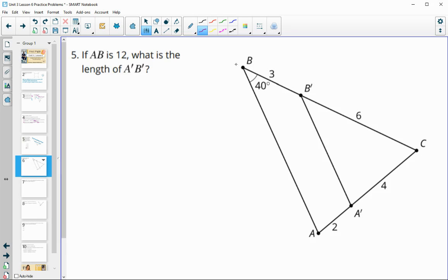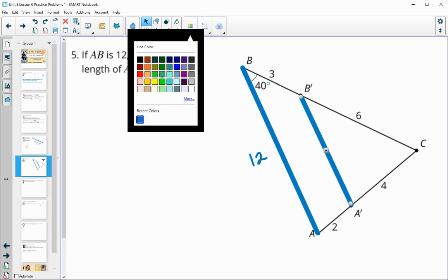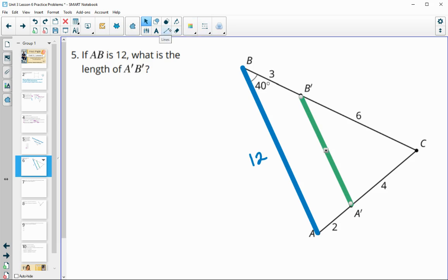Number five, if AB is 12, then what is the length of A prime B prime? So we're trying to figure out this one. So we need the scale factor to help us with this one. And sometimes this scale factor can be kind of confusing. So let's take a look at the triangles being formed here. So we've got this top triangle here.